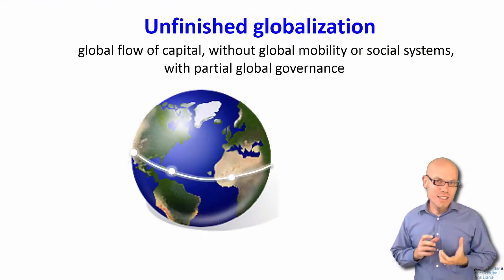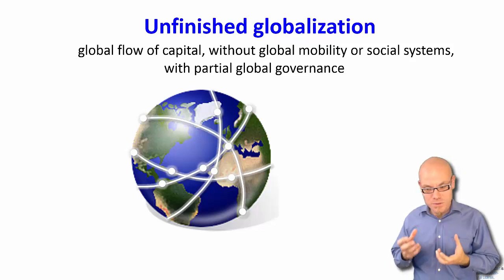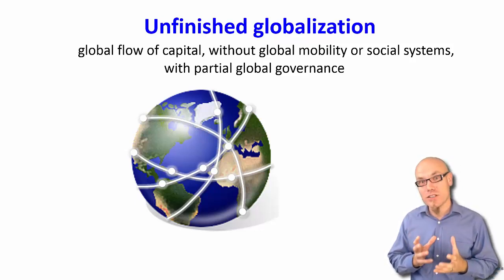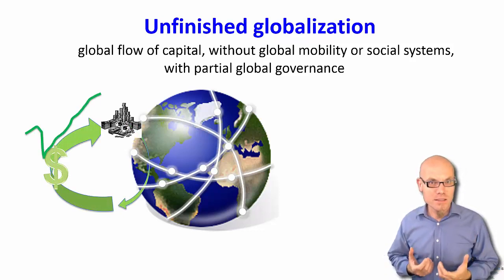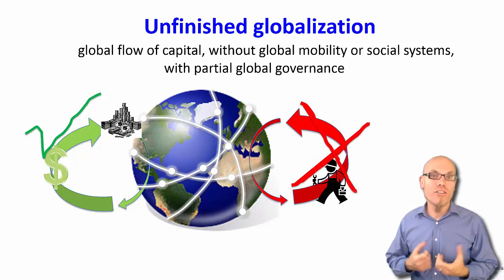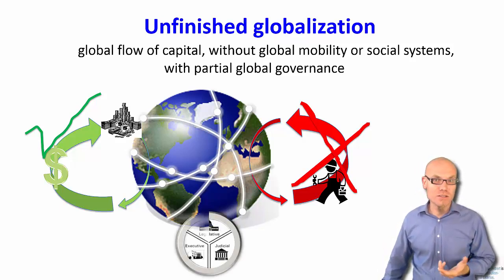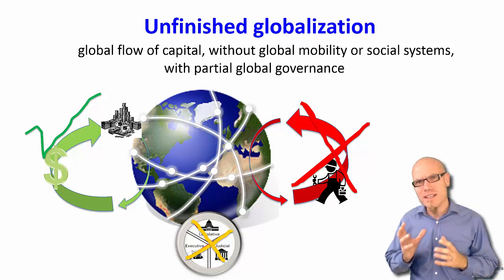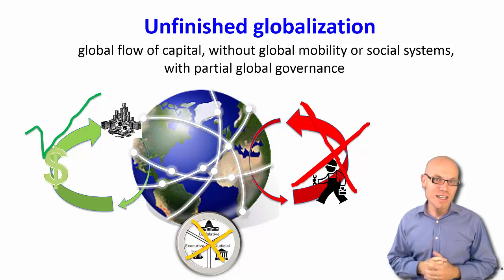Second, digitalization does not happen in a vacuum — it happens in a historical context of globalization, which comes with different characteristics, benefits, and shortcomings. This most recent period of globalization focused a lot on the flow of capital, goods, and finances, but it didn't focus as much on the free flow of labor — you cannot just go to every country and work there. The global governance structure, in the form of the United Nations, is at best incomplete, providing a context we must revisit to understand the historical background in which digitalization takes place.